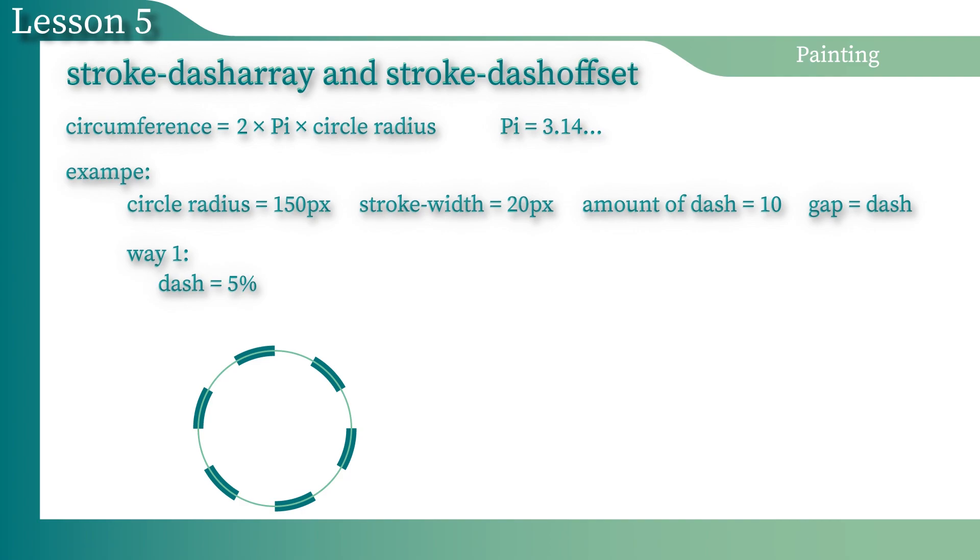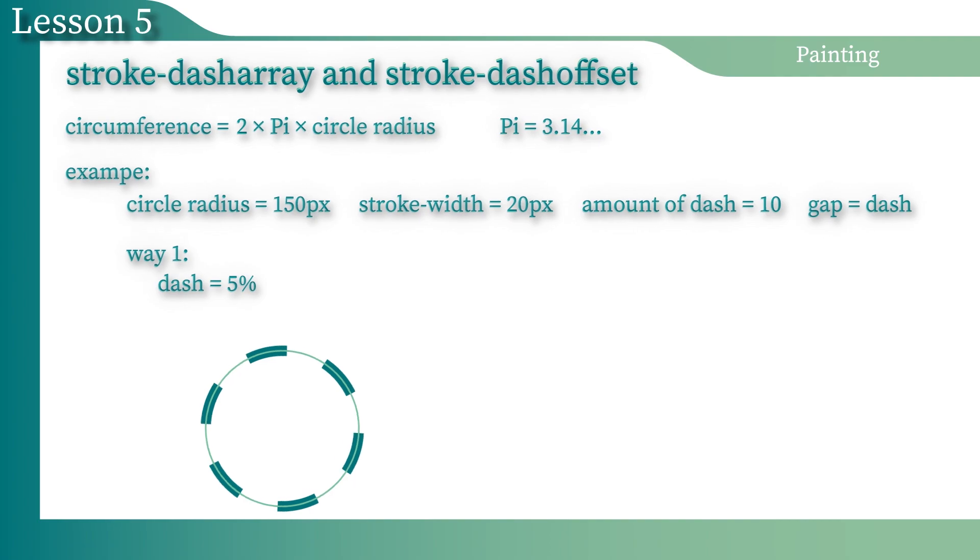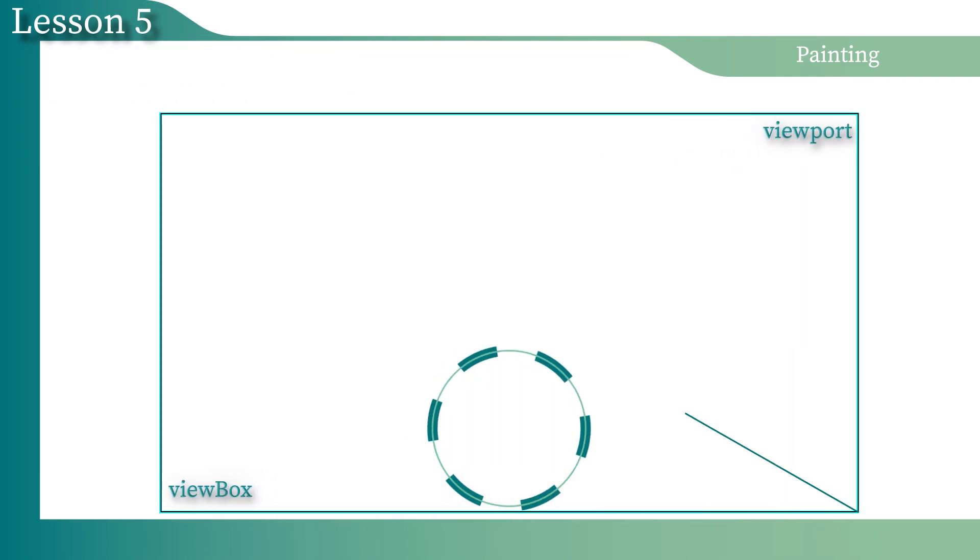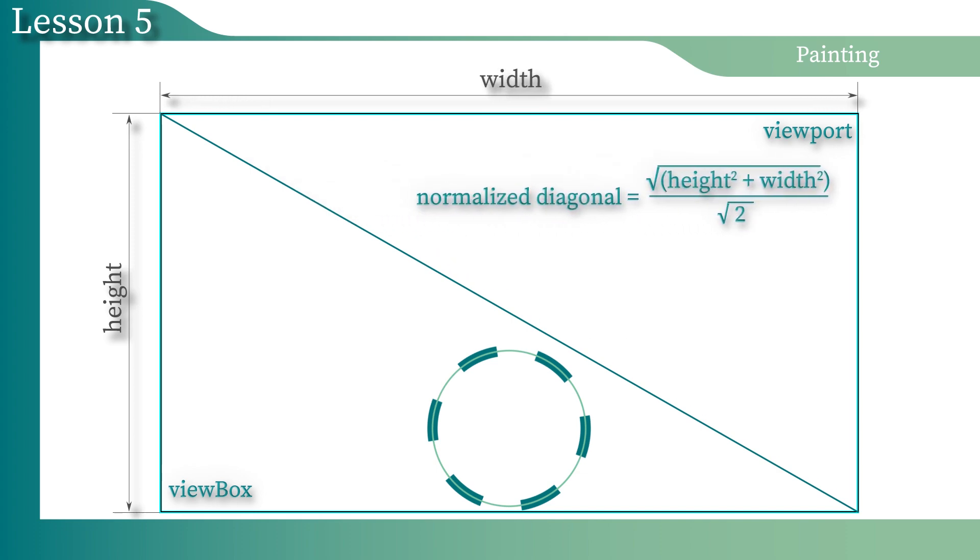The parameters of the StrokeDashArray's value of the second circle are numeric values. The length of the strokes and the gaps are equal to 5% of the circumference length. But why are these circles so different? In the first case, the percentages are percentages of the view box normalized diagonal that is applied to the viewport. These percentages haven't any in common with the length of the circumference.